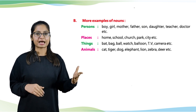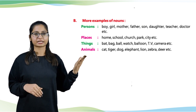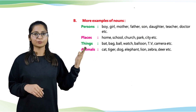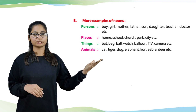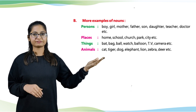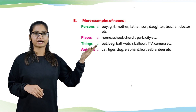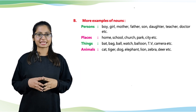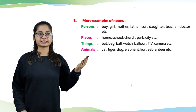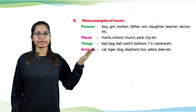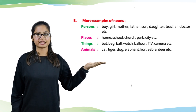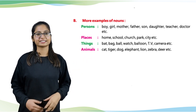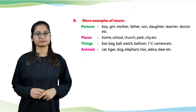Things: bat, bag, ball, watch, balloon, TV, camera, etc. Animals: cat, tiger, dog, elephant, lion, zebra, deer, etc.